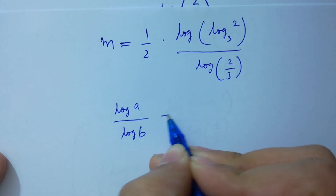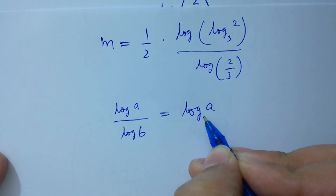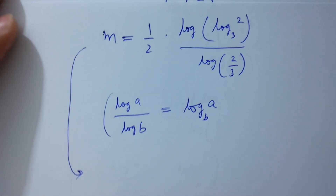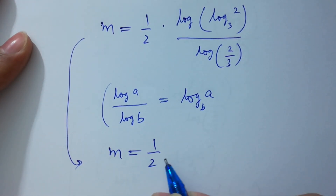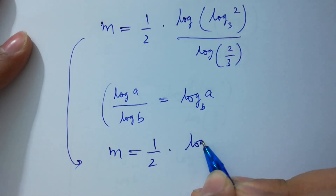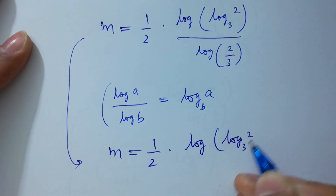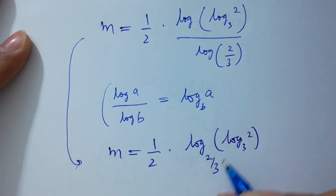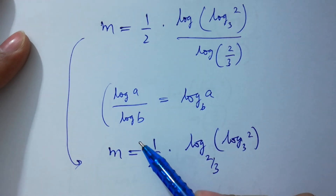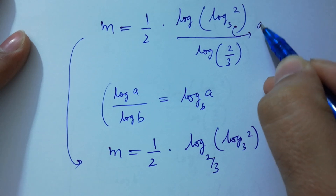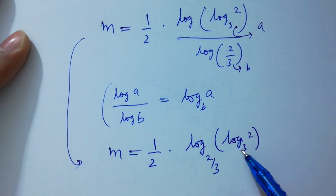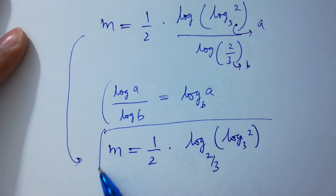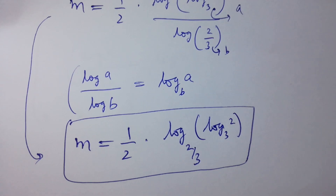Using log A over log B equals log A to the base B, m equals 1 over 2 times log(log 2 to the base 3) to the base (2/3). This is finally our value of m. Log A over B — A is log 2 to the base 3 and the base is 2 over 3 — so this is our final answer for the value of m.